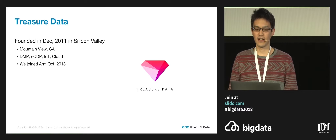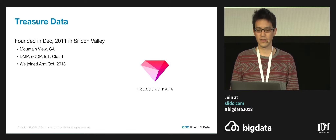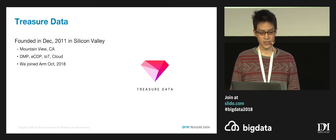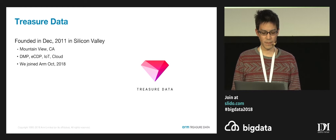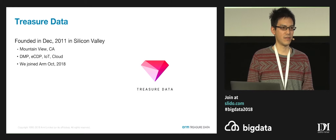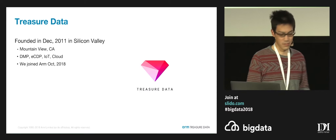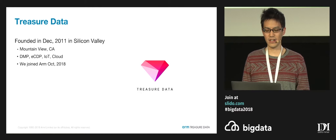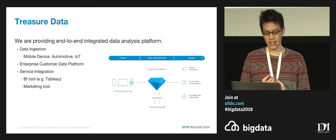So, who is Treasure Data? Treasure Data is a company which was founded in December 2011 in Silicon Valley. The headquarters is located in Mountain View, California. We are now providing several kinds of data analysis solutions like private DMP and enterprise customer data platform, or IoT on top of cloud. And fortunately, we are now acquired by ARM, which is famous for designing semiconductor chips located in Cambridge. And now we are providing new IoT services which can be easily integrated with ARM chips.